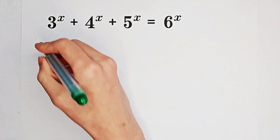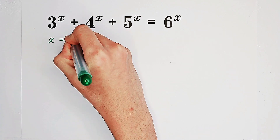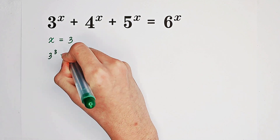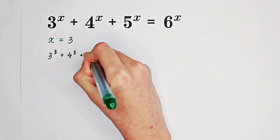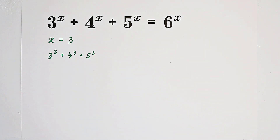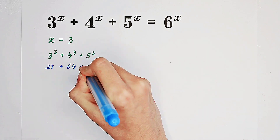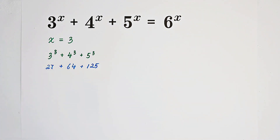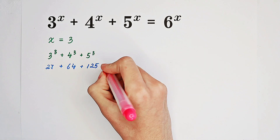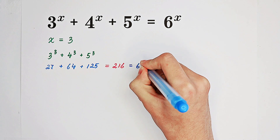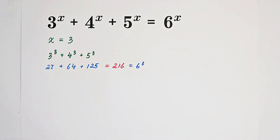There is actually a pretty answer. If x is equal to 3, then our left-hand side is 3 cubed plus 4 cubed plus 5 cubed. And 3 cubed is 27, 4 cubed is 64, 5 cubed is 125. If you sum these three numbers, you end up with 216. And 216 is actually 6 cubed. So x equals 3 is an answer — it is a solution.